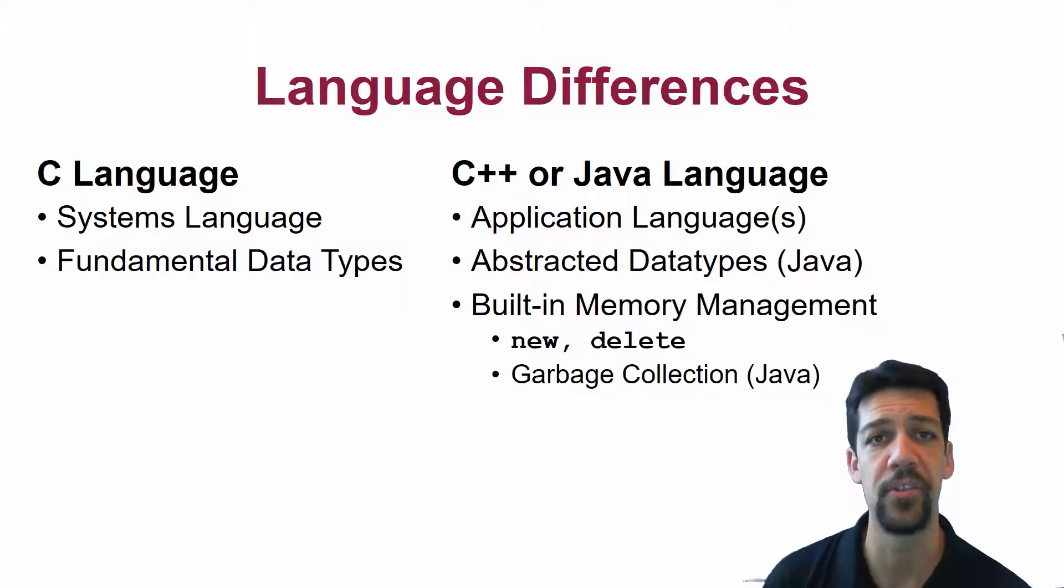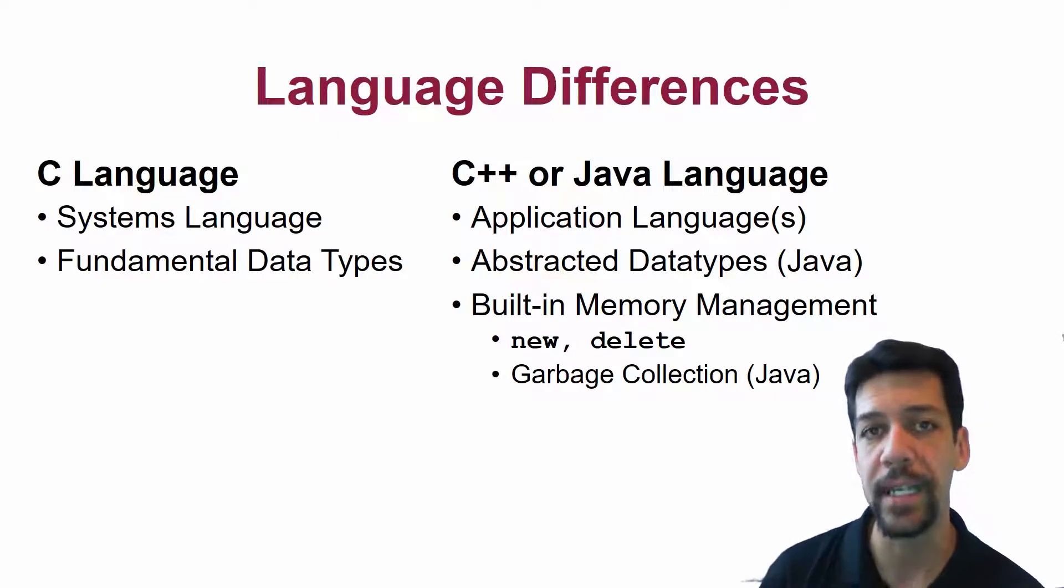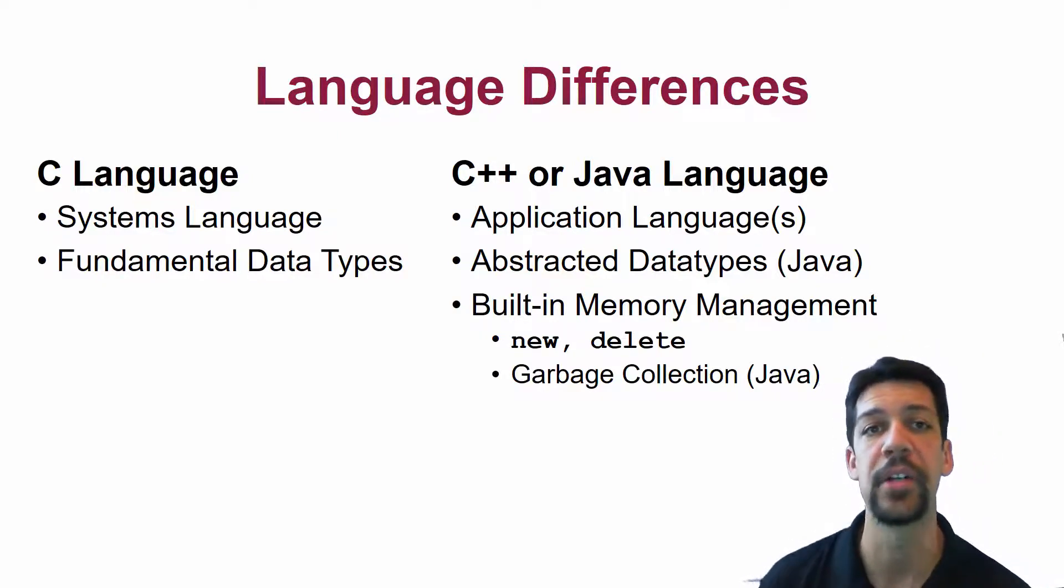In C++ and the Java language, relatedly, they have memory management built into the language. So we have the new and delete keywords in C++, we have new in Java, and we have garbage collection in Java. These are things built into the language.